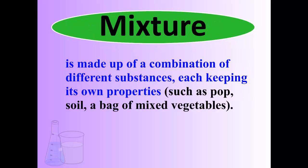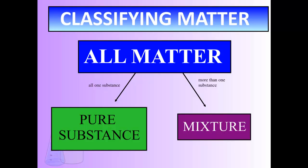Whereas a mixture is made up of a combination of different substances, each keeping its own properties. Think of a bag of mixed vegetables, or a salad — those have individual parts and I can pick out the parts if I want to. Each part contains its own special properties. Pop is another good example. So we have all matter classified as either a pure substance or a mixture.